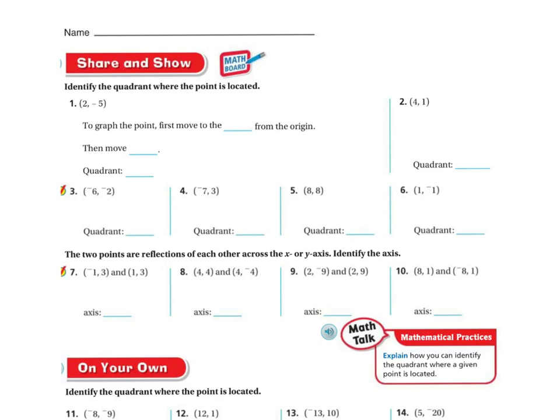Let's do a couple from the share and show. Identify the quadrant where the point is located. So if I have (2, -5), on the graph, to plot the point first, I'm going to move to the right of the origin, because that's where the positive is. Then I'm going to move down, because it's negative 5. And so my quadrant is going to be quadrant 4.